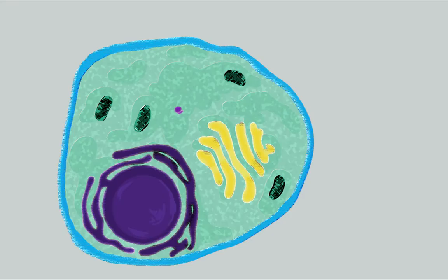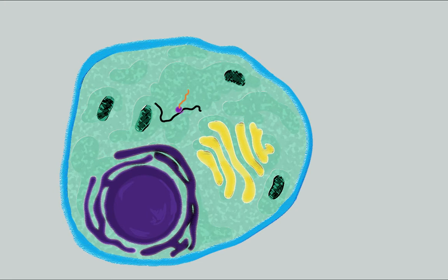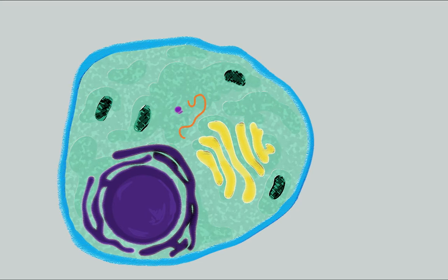However, proteins don't start out in the organelles where they are needed. They are first synthesized in the cytoplasm, and then, if they need to be transported, they are carried to various locations in the cell, such as the nucleus, the mitochondria, and the endoplasmic reticulum.